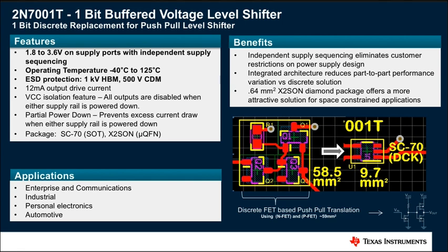Key features of the device include 1.8 volt to 3.6 volt level shifting, operating voltage temperature range from minus 40 to 125°C, ESD protection up to 1 kV, 12 milliamps of output drive strength, VCC isolation, as well as partial power down capability.